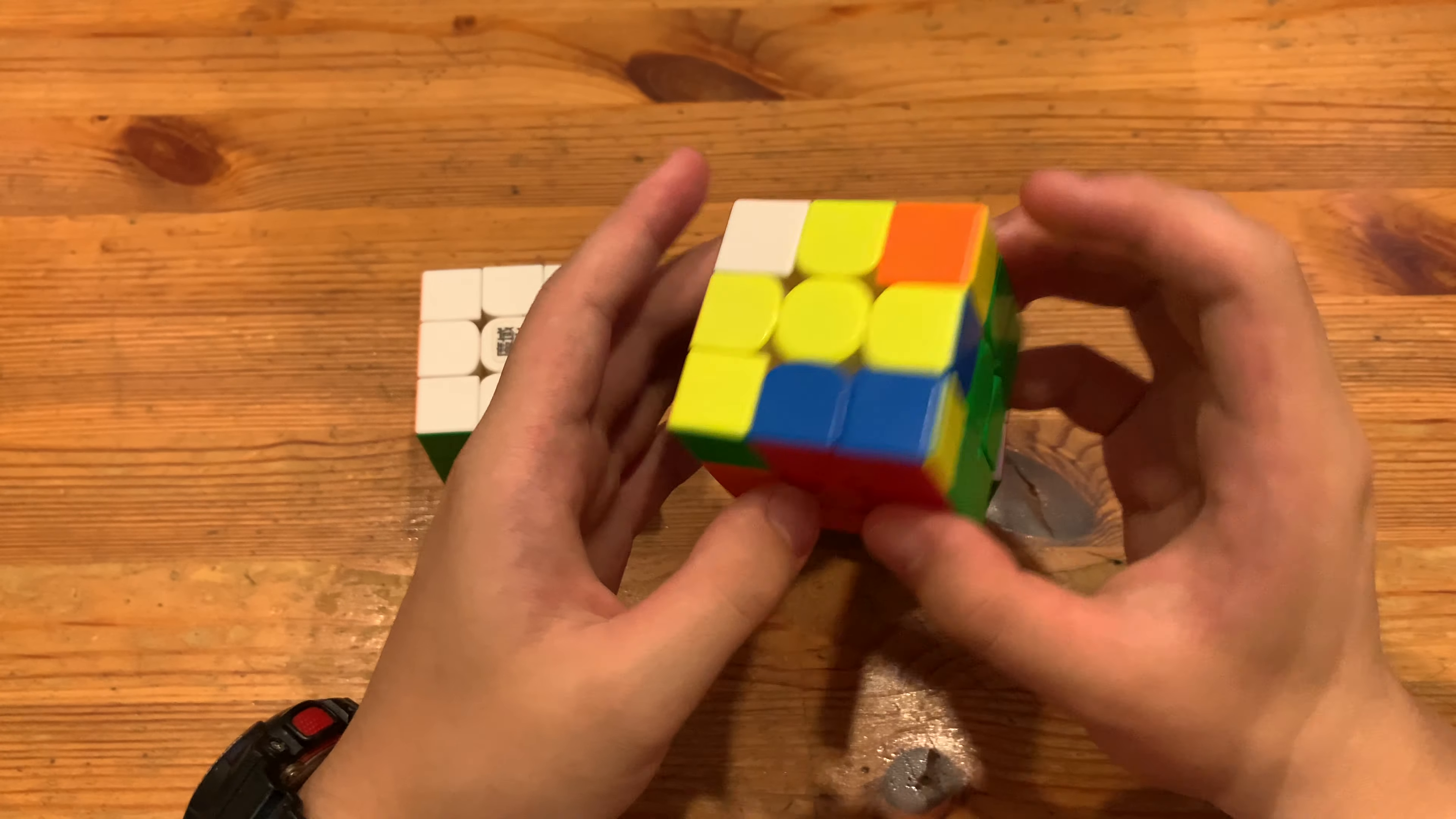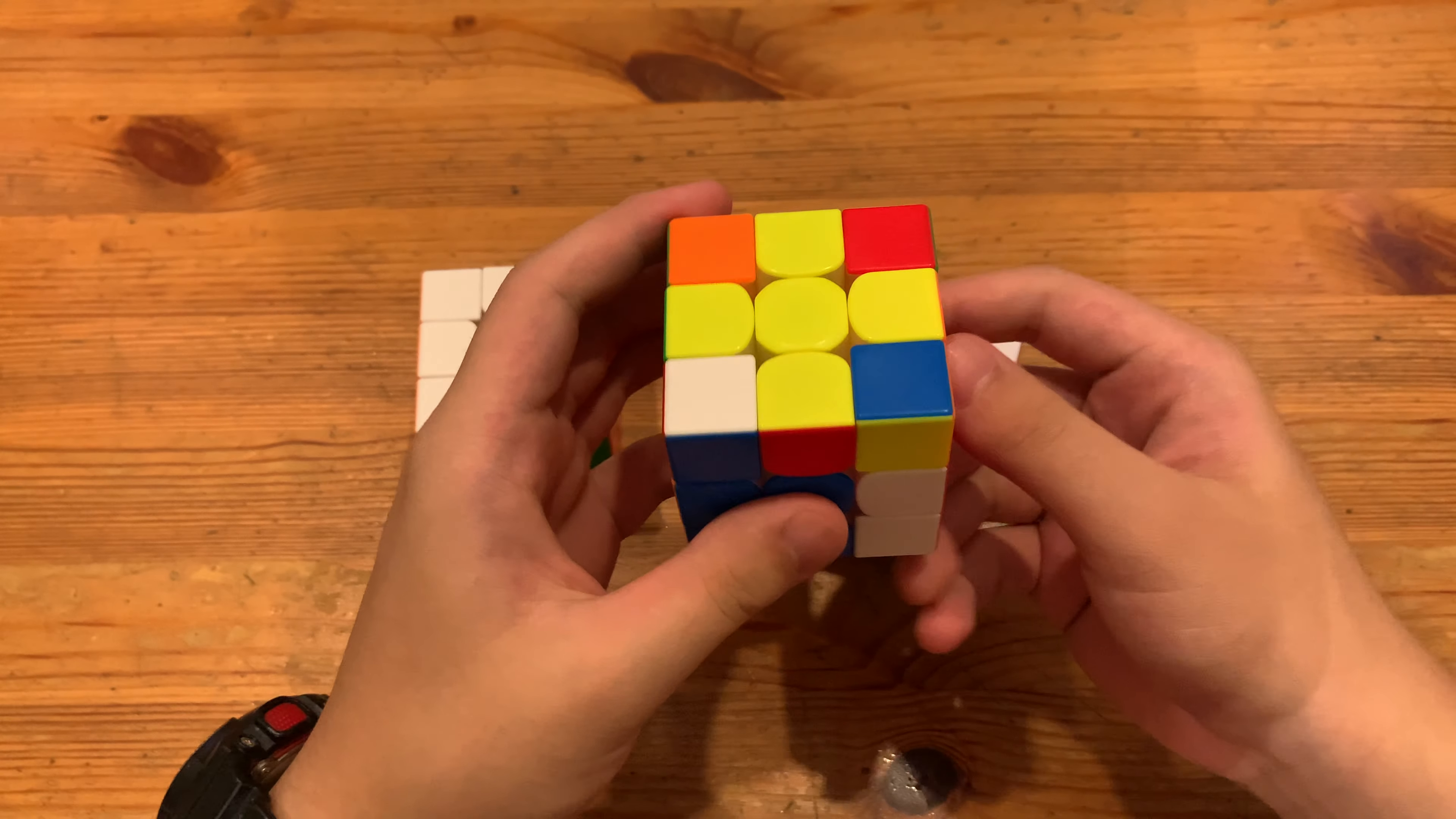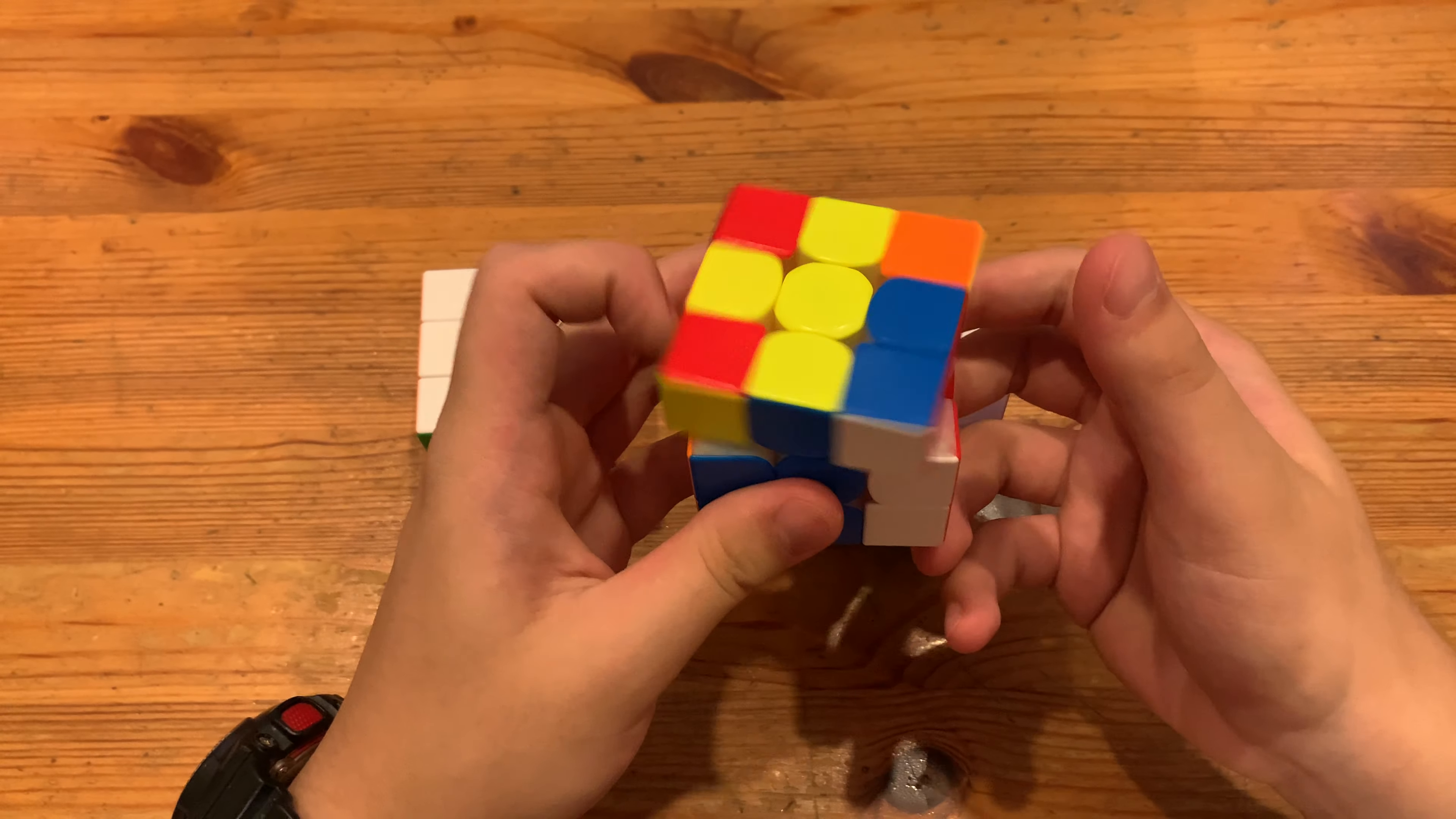And then here to solve this F2L here, I'll rotate because I have all my edges oriented. And instead of doing a full rotation like that, I'll just re-grip my left hand like that. And then here, I'll just do R like this. So it won't really be a full rotation.